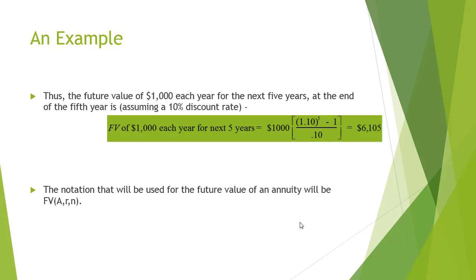Let us take an example to find out the future value of an annuity. The future value of $1,000 each year for the next 5 years at the end of the fifth year, after assuming that a 10% discount rate is available, would be $6,105.